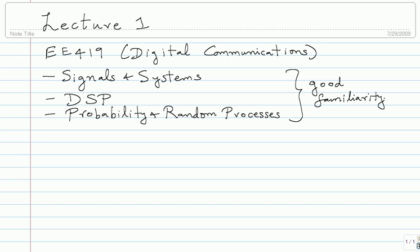There's also a course running in parallel which is the lab course for dual degree students — I think it's 471, called Advanced Communications Lab or something like that. I'll run it along with this course in parallel. Students who are not dual degree are also welcome to do the lab; most of the lab information will be on the website. I'll only be grading dual degree students on the lab.